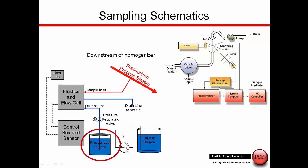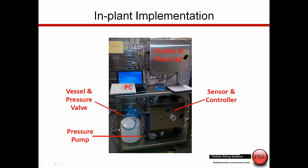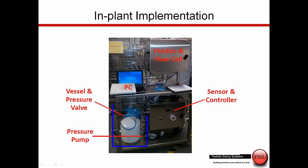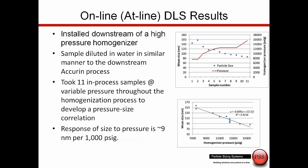The diluent source is pressurized to come into the fluidics, so we can perform DLS measurements in-process. Here is a picture of this instrument in the customer's processing plant. The fluidics is up here, this is where the sensor is, and the pressurized diluent is kept down here to pump into the system for dilution — all this downstream of the homogenizer.